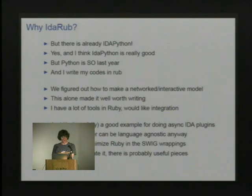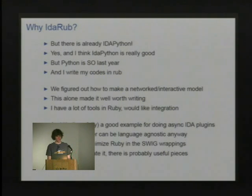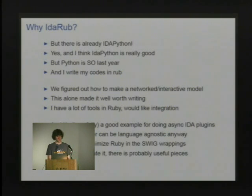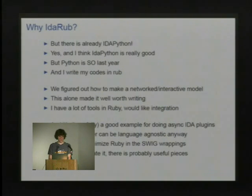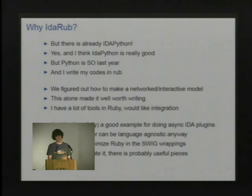Another thing is I have SWIG wrappers that I wrote, and I try to keep the Ruby-specific aspects as small as possible, so if you wanted to use the same wrappings to wrap the SDK in Python or Tcl or something, that would be good. So even if you don't care about Ruby at all, there might be some useful pieces — the SWIG wrappings and the plugin and stuff like that.